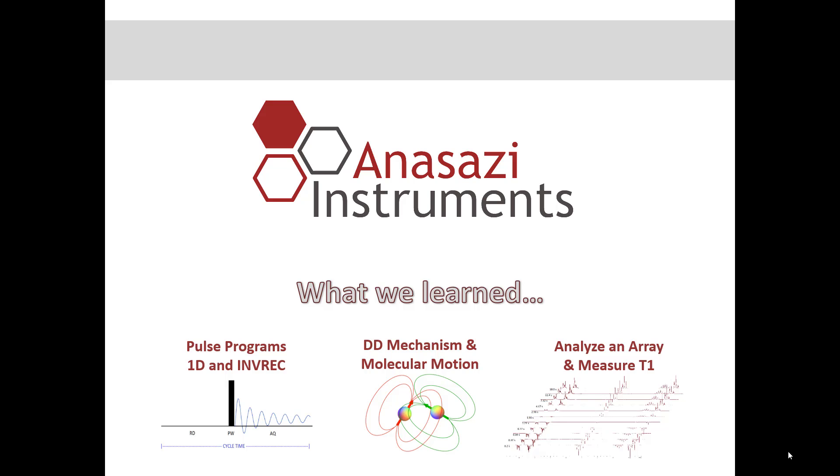So what have we learned today? We learned a little bit of how to read pulse programs. We looked at a 1D pulse program and an inversion recovery pulse program. We talked about the dipole-dipole mechanism and how bond distance and molecular motion affect the relaxation rate. And we learned to analyze an array and measure the T1. Thank you for your time.